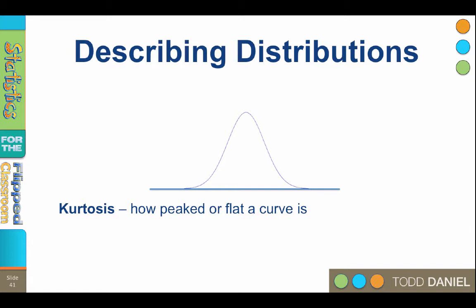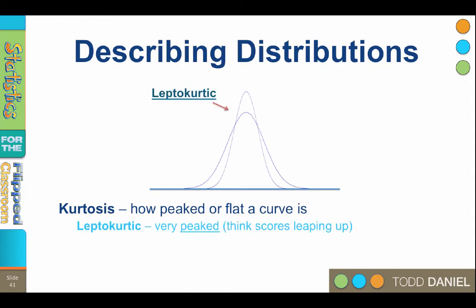The first difference we may find is that the scores in the distribution are more spread out than we would have expected, or we may find the scores are more closely packed together than expected. The name for the peakedness or flatness of a curve is called kurtosis. When the scores are very close together, the curve becomes peaked.